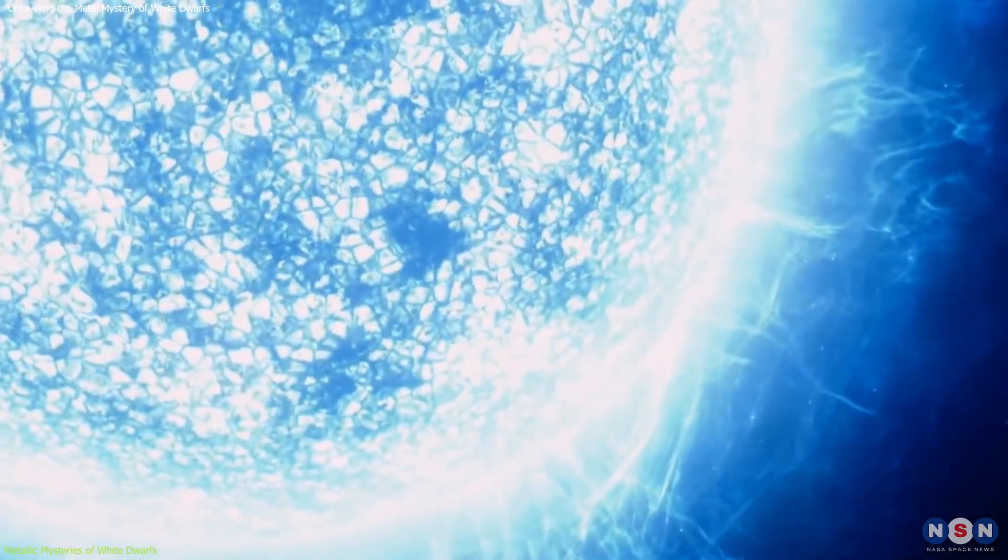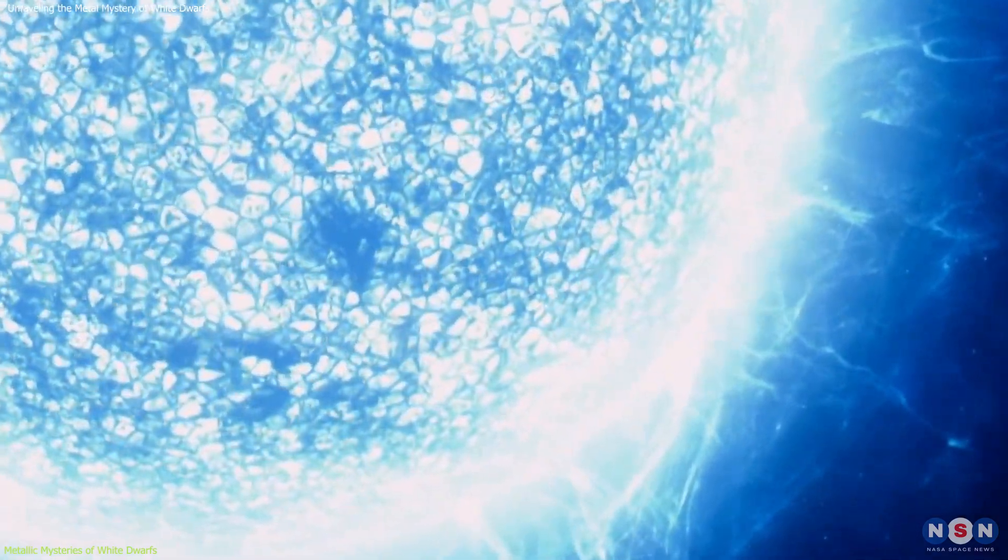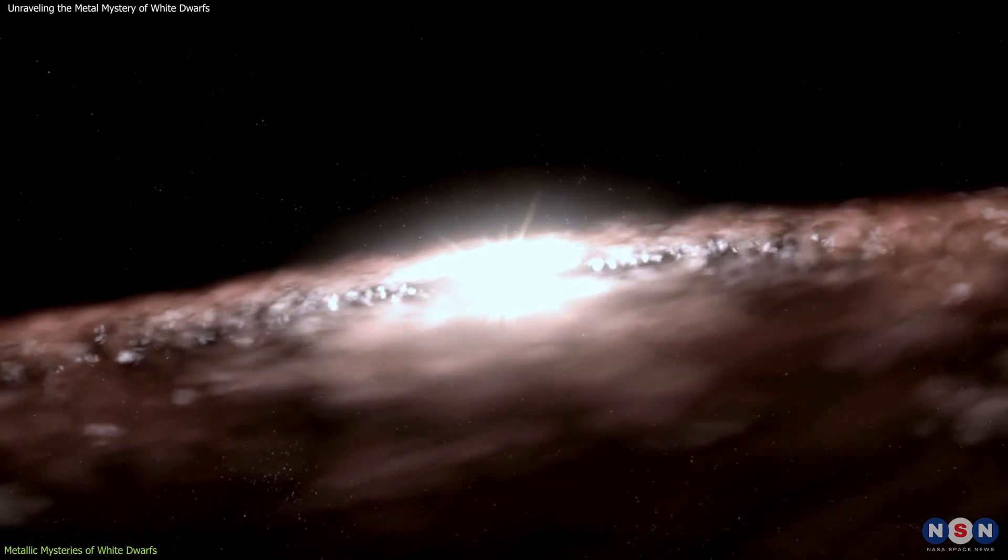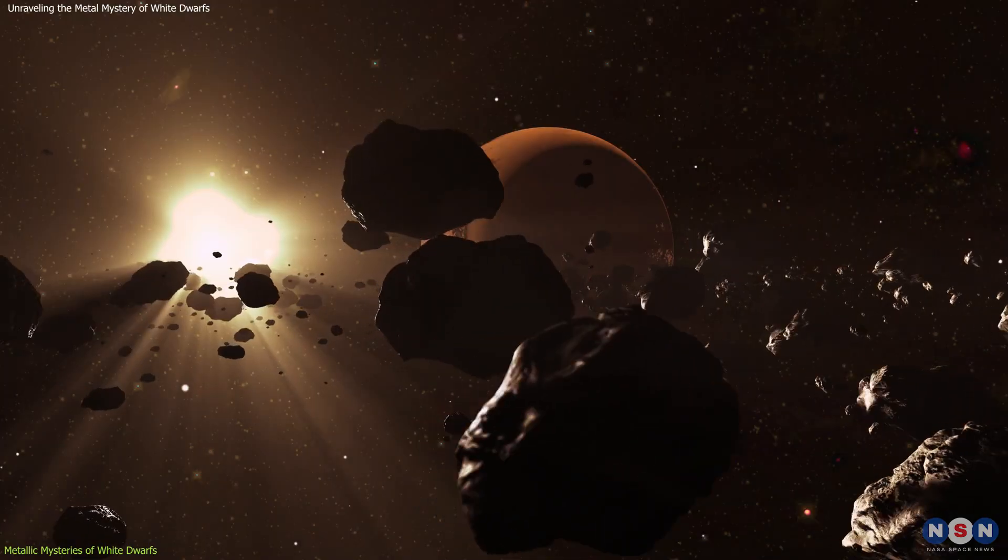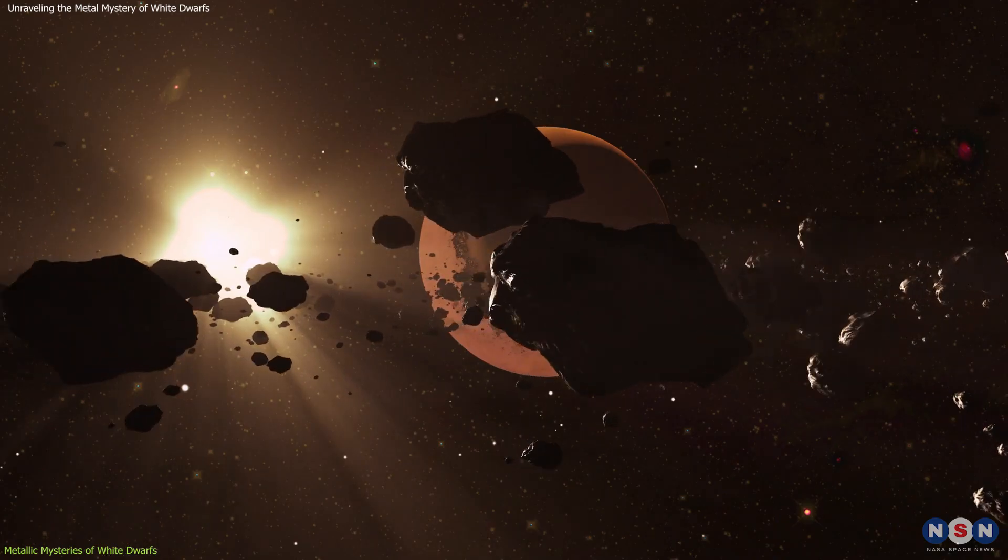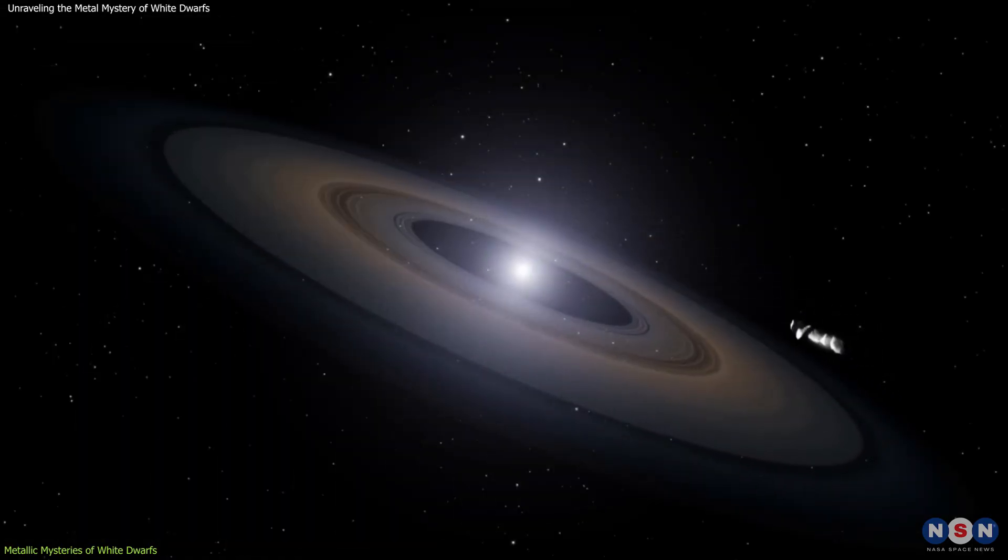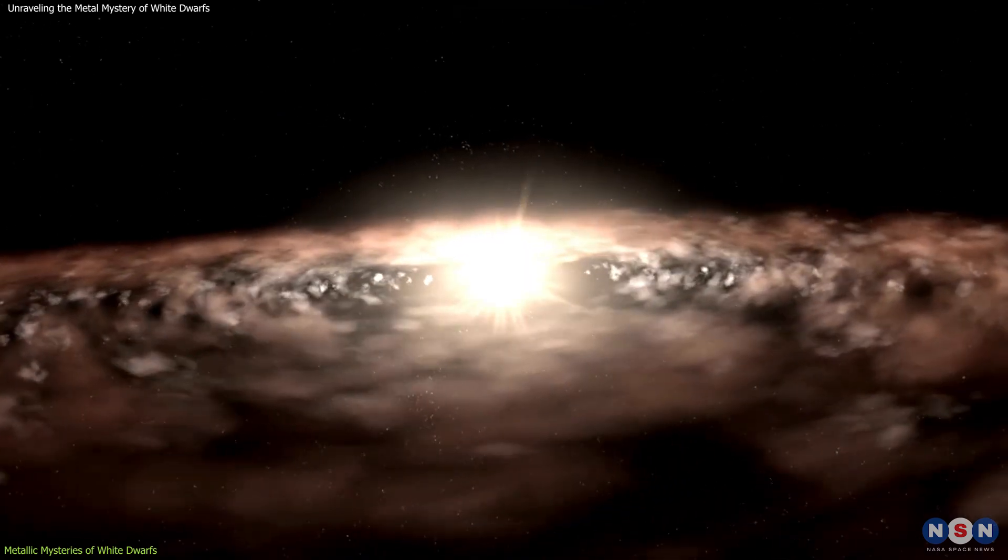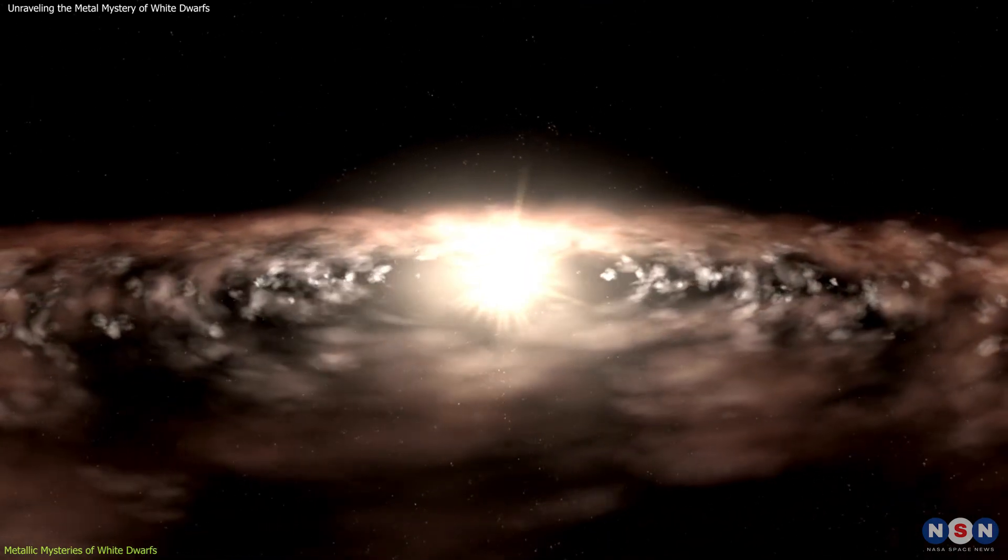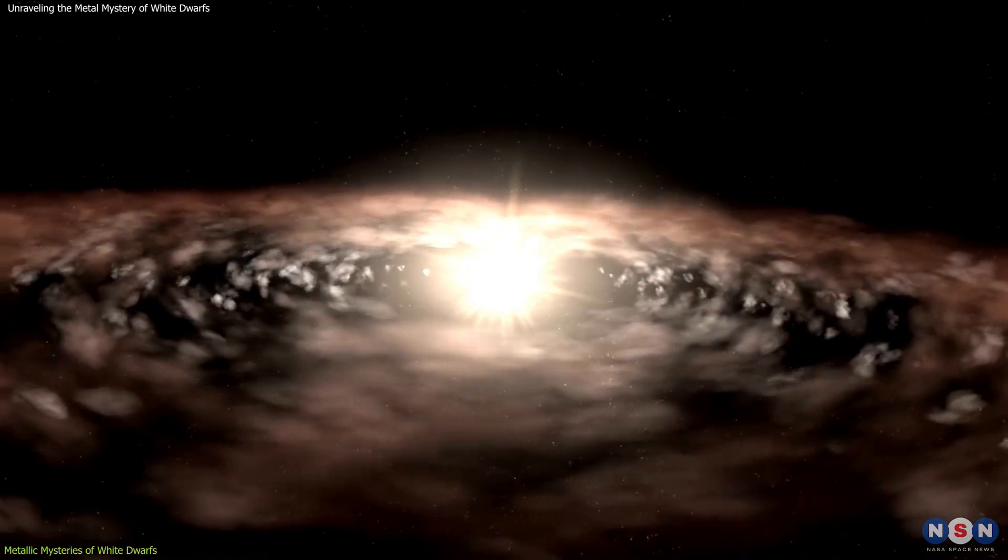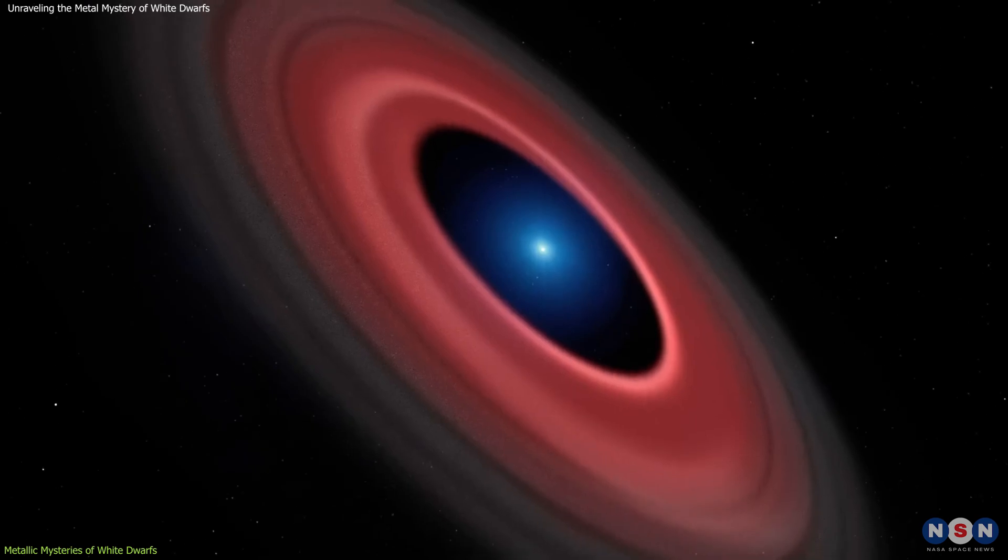One prevailing theory suggests that white dwarfs actively accrete material from their environment, such as planetary debris, asteroids, or comets drawn in by their strong gravitational pull. Simulations support this, showing that a white dwarf's gravity can capture nearby material, which then spirals onto its surface, counteracting the inward pull of its gravity.